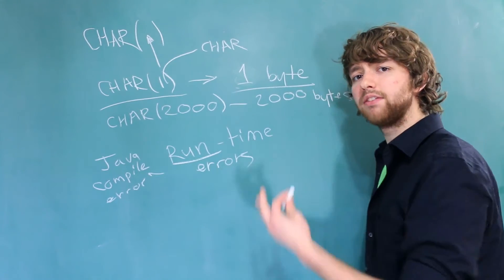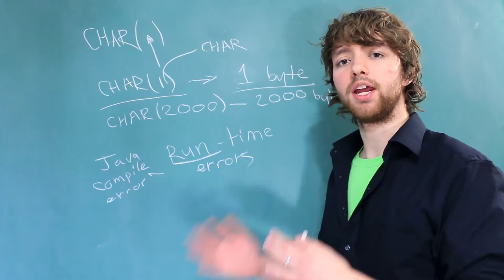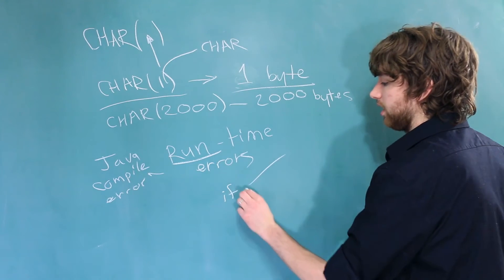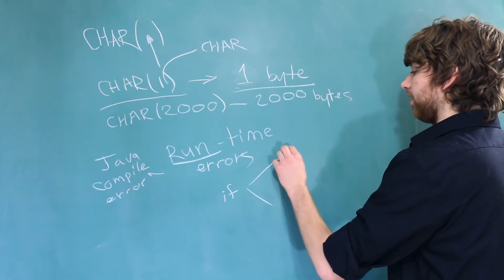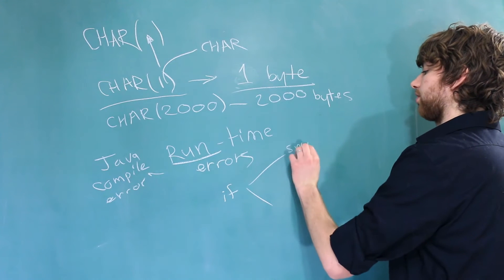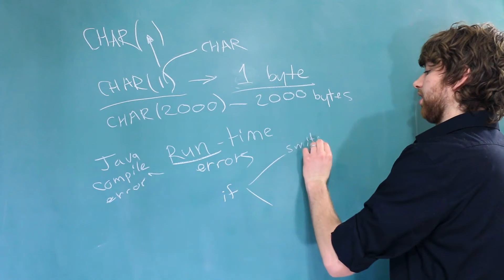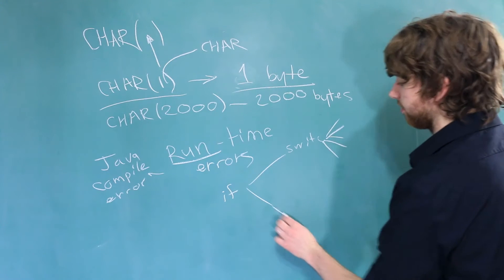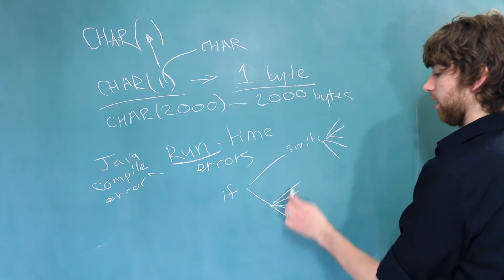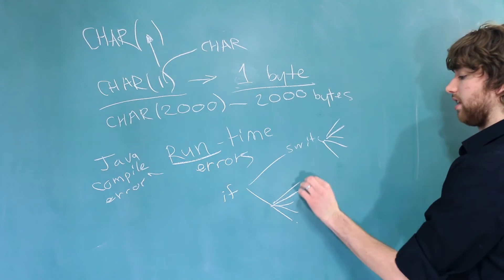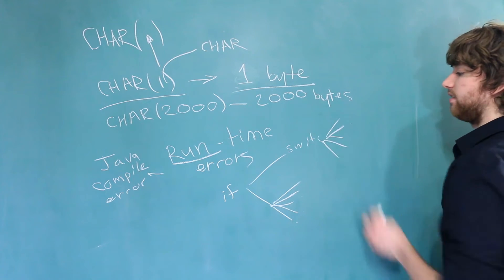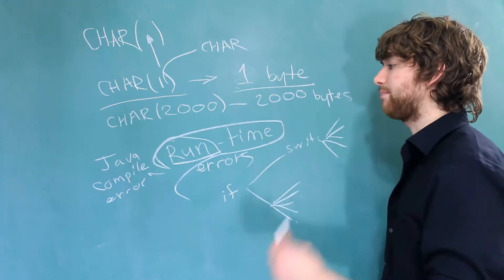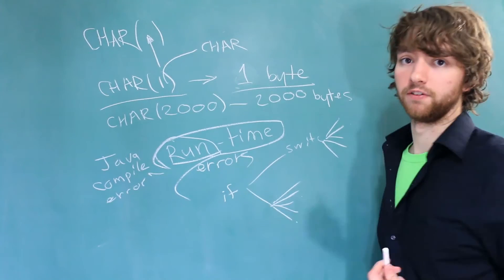The bad thing about runtime errors is that they can happen anywhere. In our code, if we have even one if statement, the path divides into 2. And then if we have a switch, it might divide into 5. You can see that all of these endpoints would have to be individually tested for runtime errors, which means runtime errors are very hard to find.